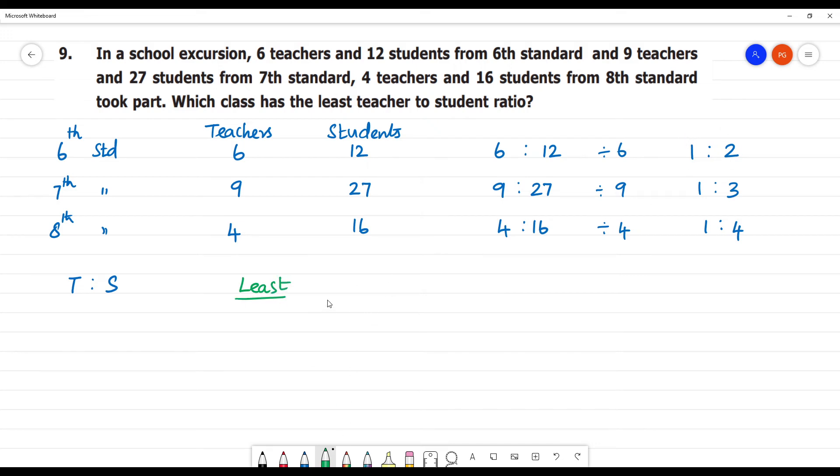This is writing in fraction form. 1 is to 2, so 1 by 2. This is 1 by 3. This is 1 by 4.